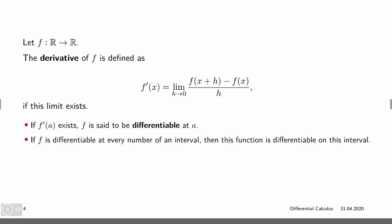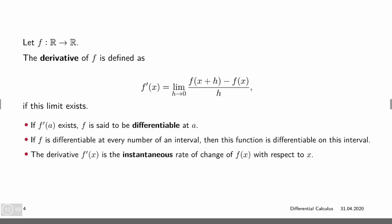And if it exists within a whole interval — basically every single number within this interval — then we would call the function differentiable within this interval. Again, f prime is an instantaneous rate of change with respect to our parameter x.